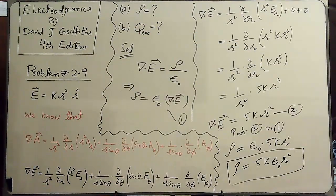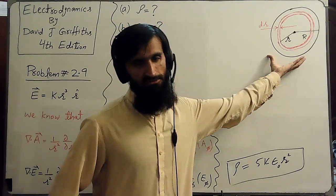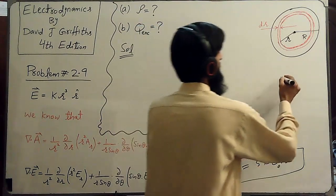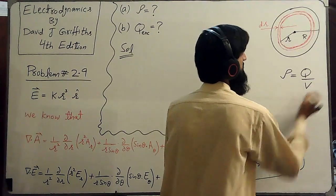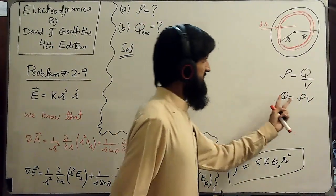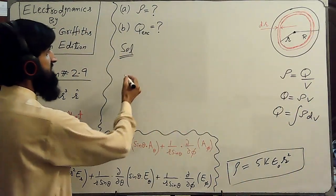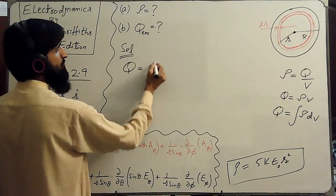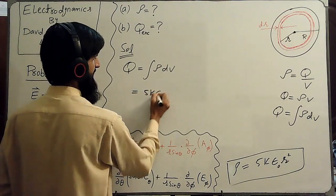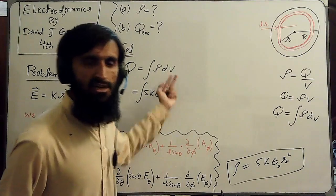Now let's find the second quantity — the total charge enclosed by the sphere. We use the formula that charge density rho equals total charge enclosed per unit volume. Separating Q gives Q equal to rho times V, and converting to integral form, the total charge enclosed equals the integral of rho dV. So Q equals the integral of rho dV, where rho is 5K epsilon naught R².